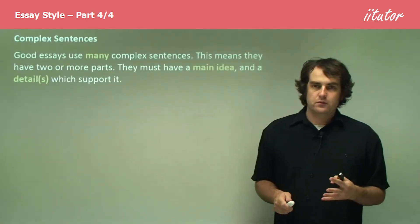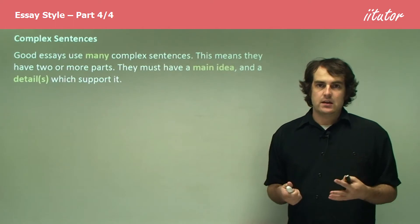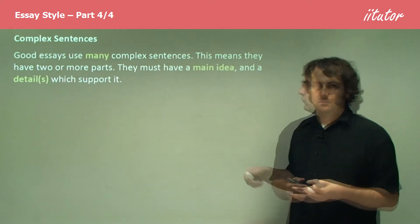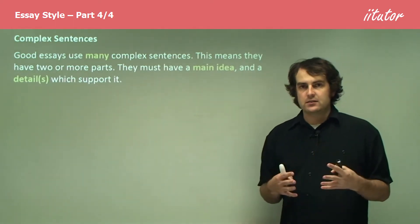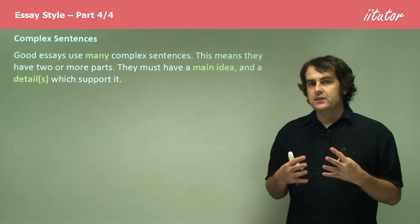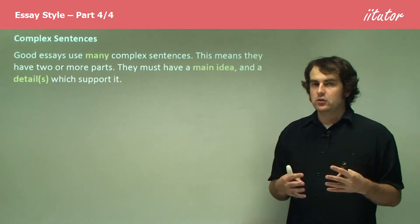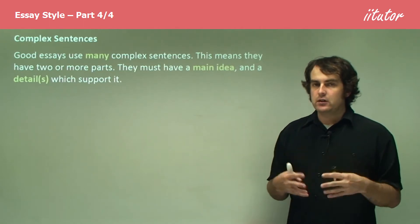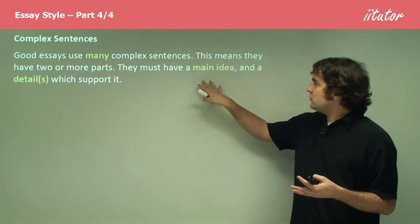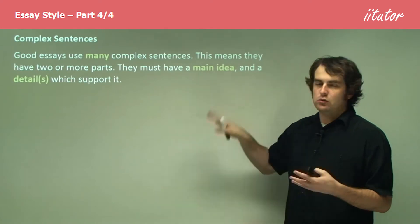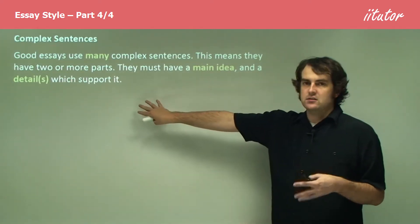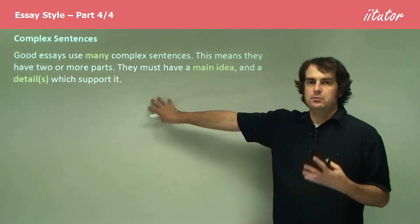The final feature of an essay is something which we call complex sentences. For further details on complex sentences, I'm going to go through it very briefly here — there will be a video on complex sentences, so have a look at that for more information. In terms of what we're going to look at, it just means that your sentence has two or more parts: a main idea and a supporting detail.